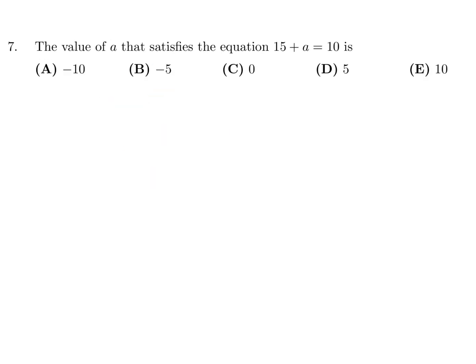The value of A that satisfies the equation 15 plus A is 10. 15 plus A is equal to 10. So A would be 10 minus 15, and that is negative 5. Number 7, the answer is B.